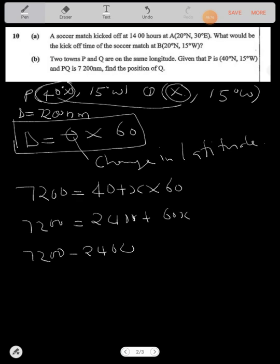So this will be equal to 60X. So what we're getting is 4,800 is equal to 60X. So you divide both sides by 60, both sides by 60. You get X will be equal to 80 degrees.